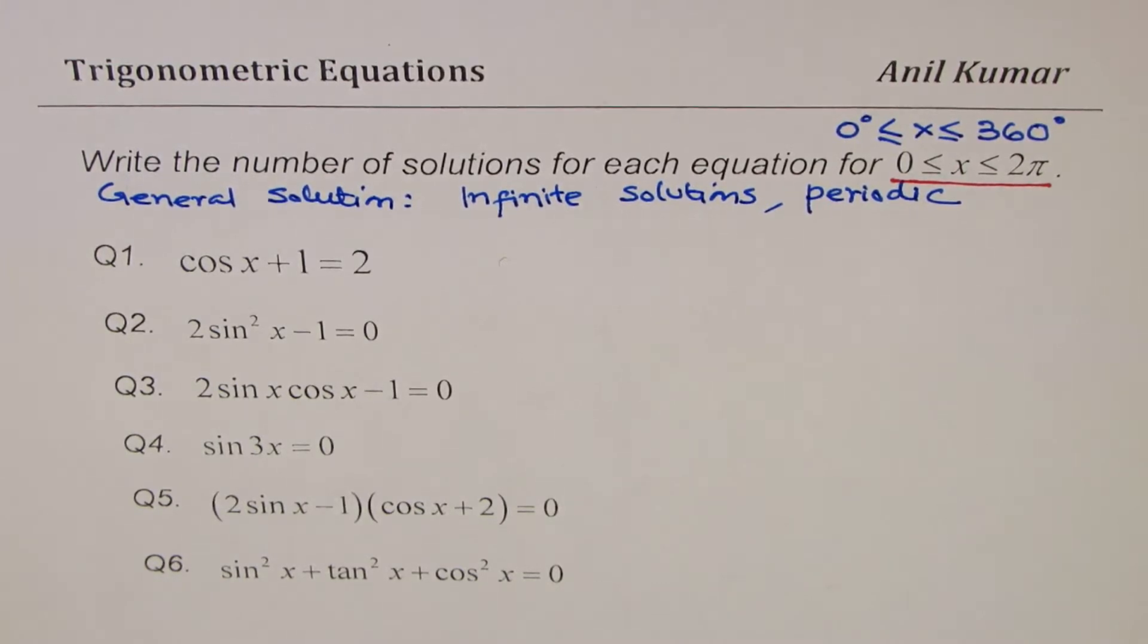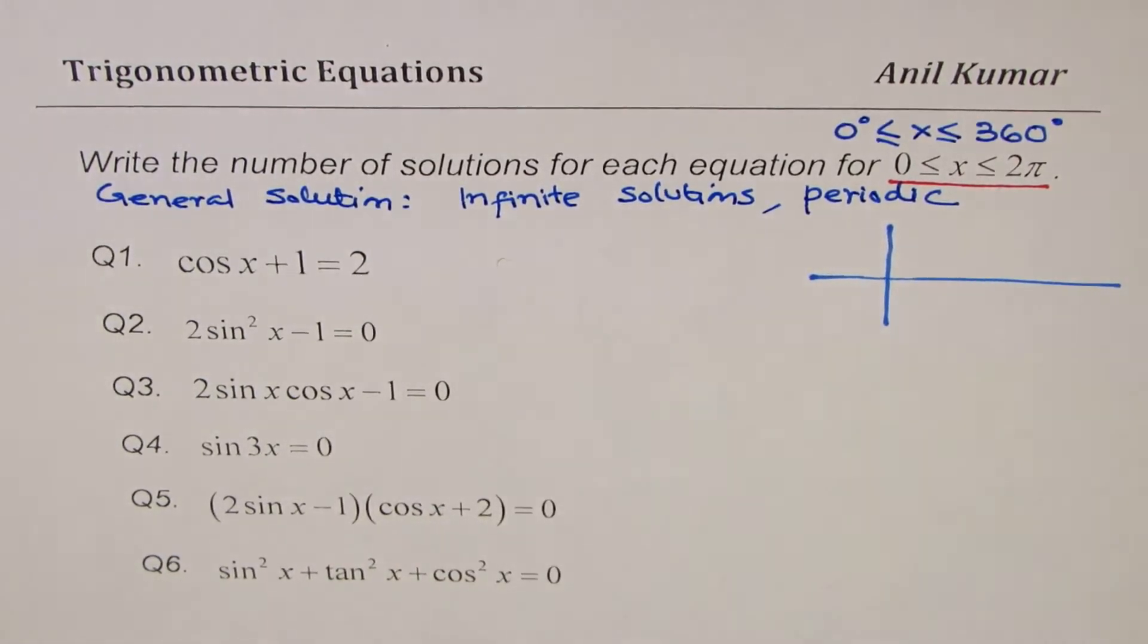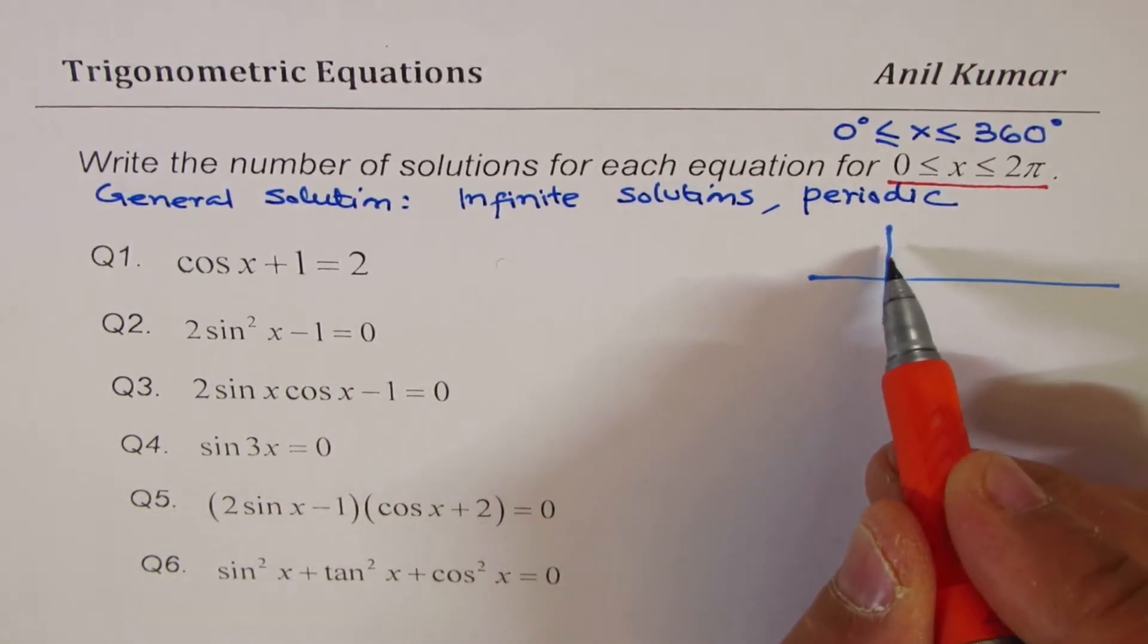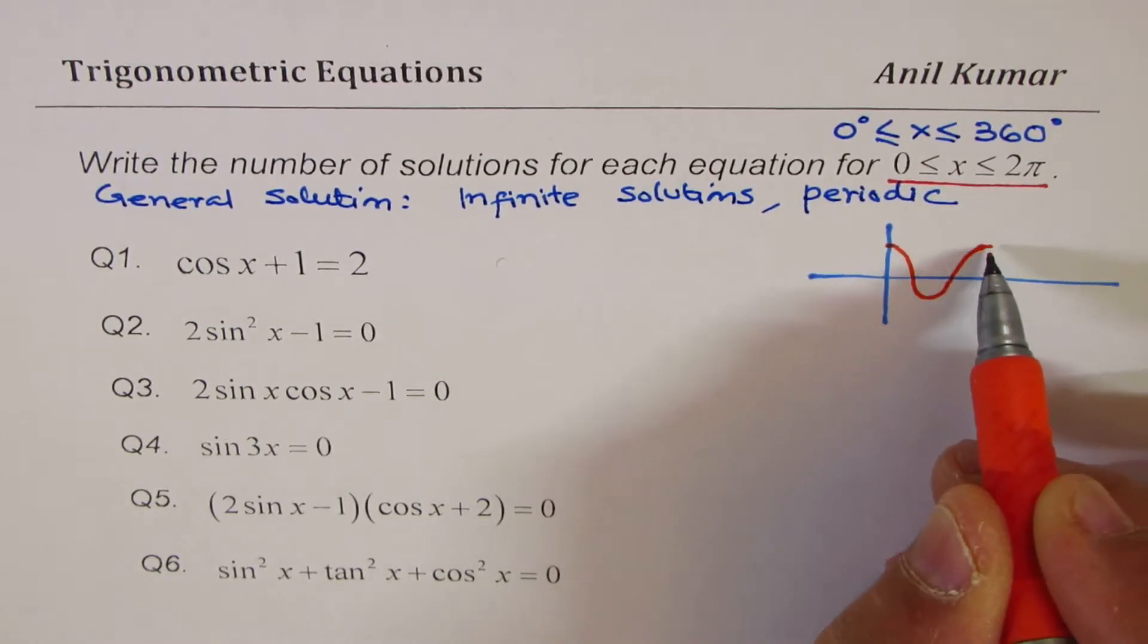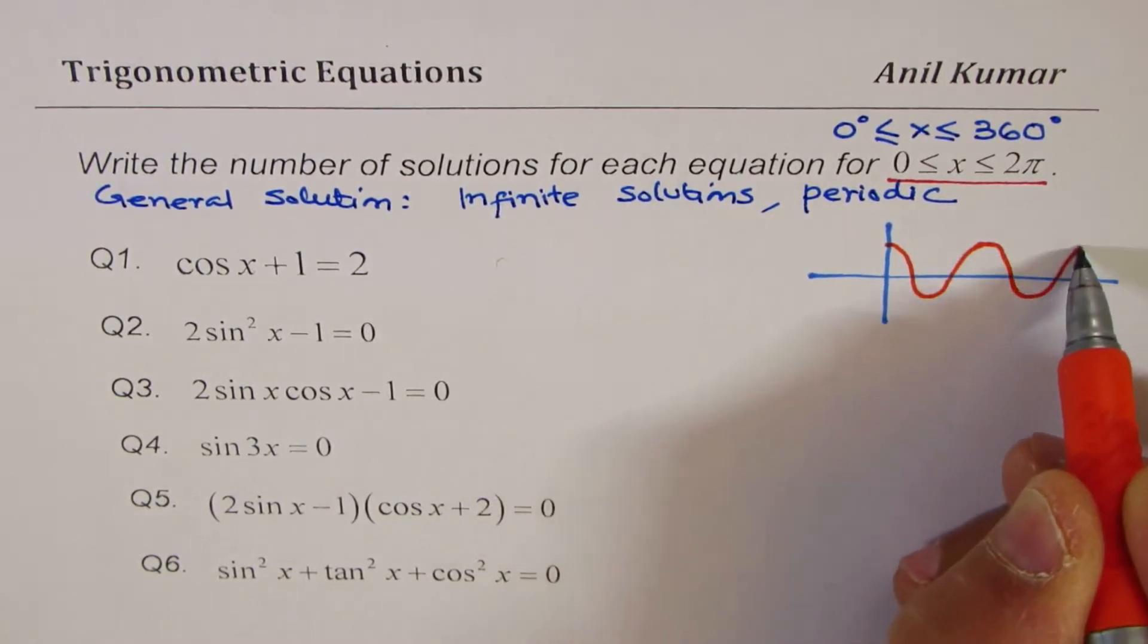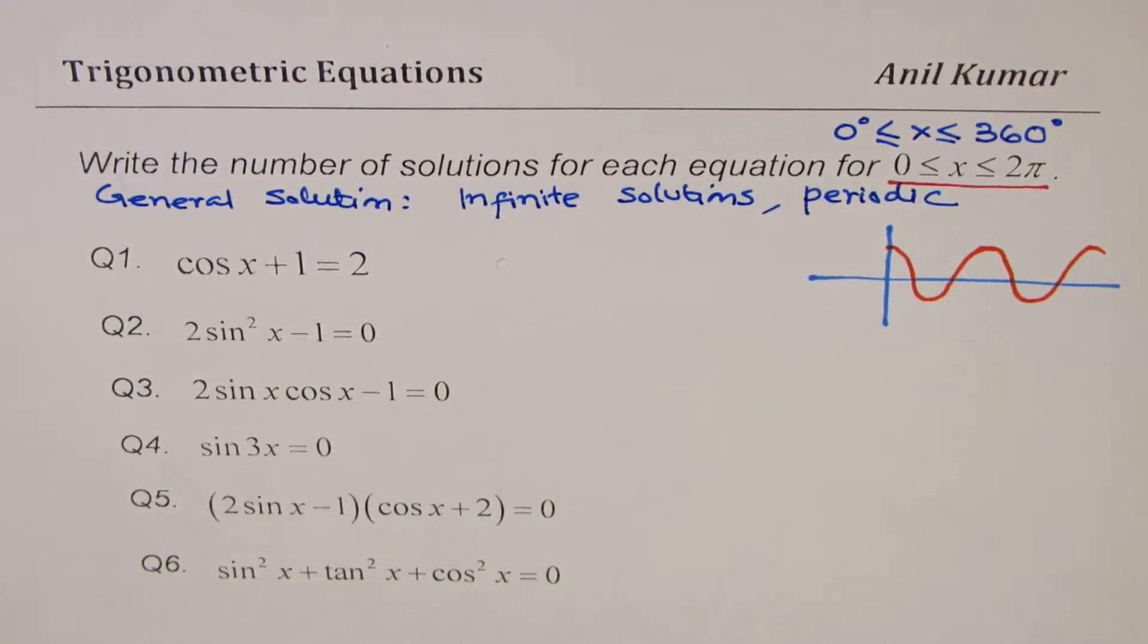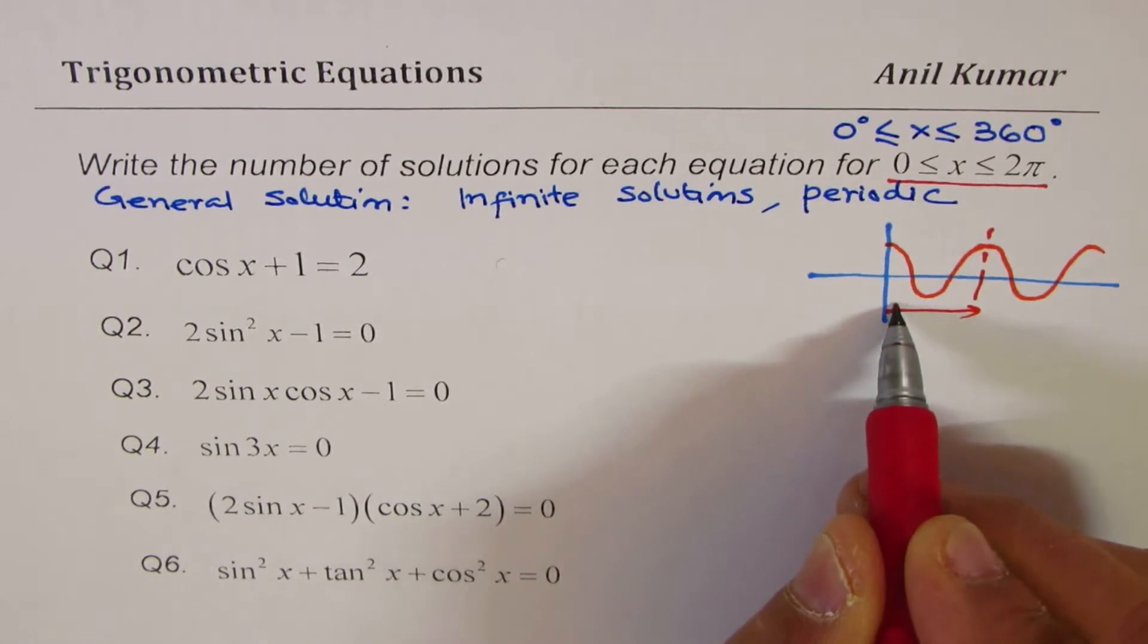Let's begin with the very first one, which is cos x + 1 = 2. Whenever you have to find number of solutions, it's a good idea to sketch the curve. At least have it in your mind. When we say cos x, we are looking for something like this. When we say 0 to 2π, we are looking for solutions within this domain.